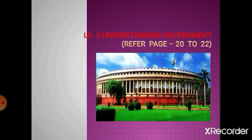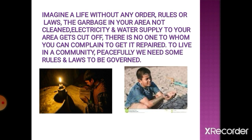Now you might have understood what government is. Let's know in detail how it functions. Government sought to protect the rights of unorganized workers. Government fixes prices of onions to ensure no shortage in the market. So every government needs to make decisions and get things done. These can be decisions about where to build roads and schools, or how to reduce the price of onions.